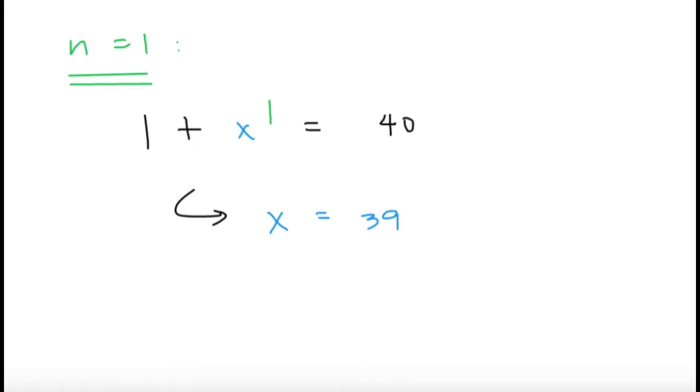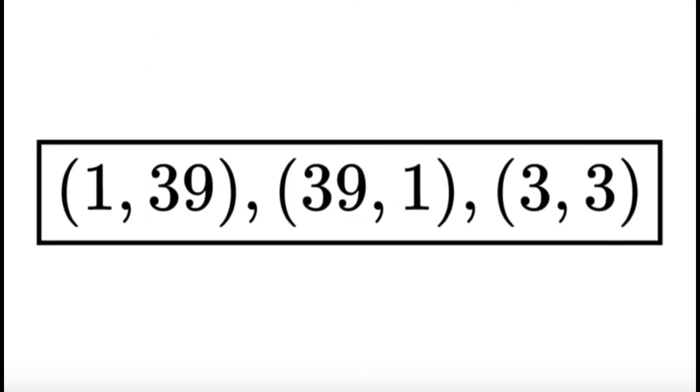And lastly, we're going to take into consideration the case n equals 1. Well, this is pretty simple because you're going to get that 1 plus x equals 40. And that's going to give you the solution x equals 39. So this will give us our third and final ordered pair of 39 comma 1. So all we have to do is just gather all the ordered pairs that we got. So we have three solutions: 1 comma 39, 39 comma 1, and 3 comma 3. And these will be the final answers to the item.